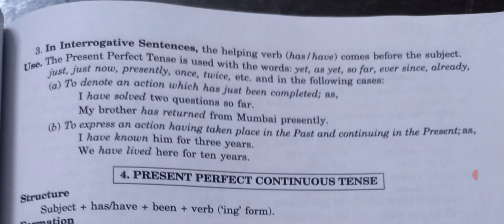Interrogative examples in present perfect: 'Have you completed your work?' 'Have you eaten something?' 'Has she completed her task?' 'What has she done?' 'What have they spoken?' These are examples of interrogative sentences in present perfect tense.